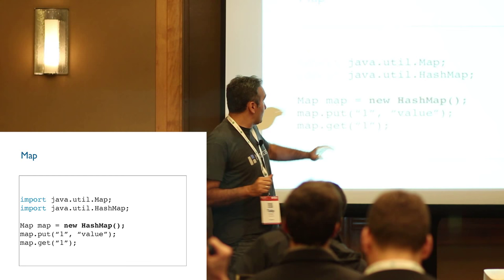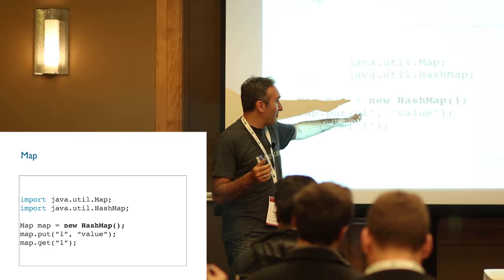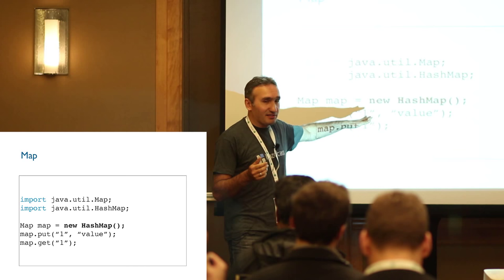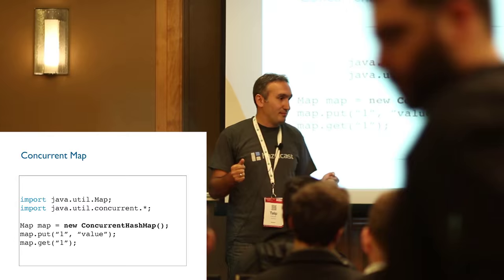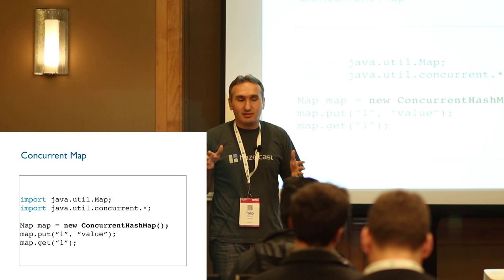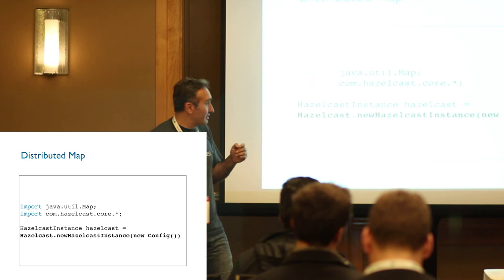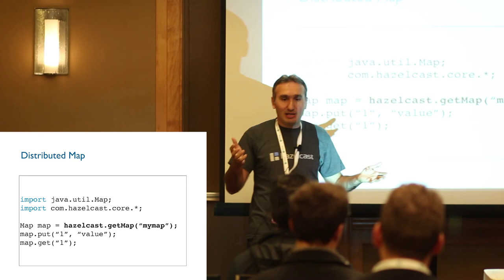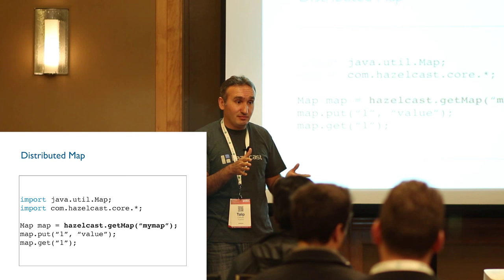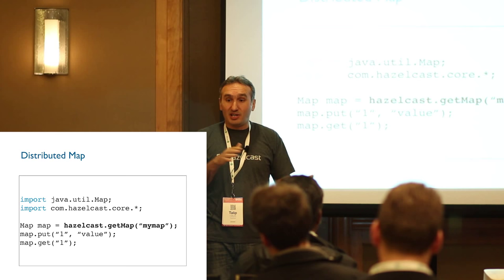So what is Hazelcast? We all know HashMap — it's key-value. The HashMap is not thread safe. If you want to share a map across multiple threads, we use ConcurrentHashMap or any thread-safe HashMap. But what if we want to share the map across multiple JVMs — not just threads, but multiple JVMs? That's Hazelcast.